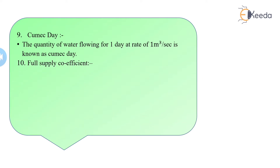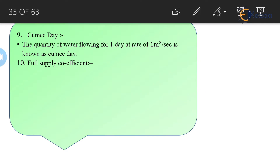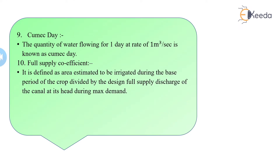The full supply coefficient is the ratio of the area irrigated or estimated to be irrigated during the best period of the crop, divided by the design full supply discharge of the canal at its head during the period of maximum demand.